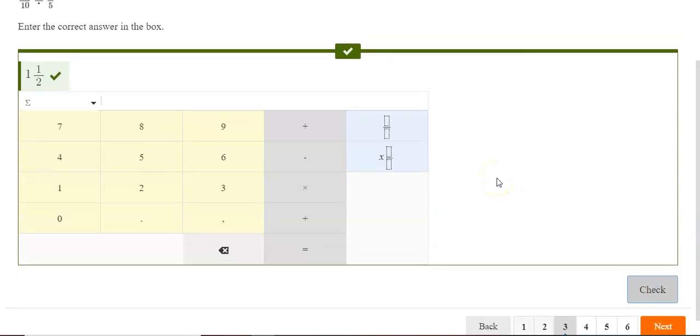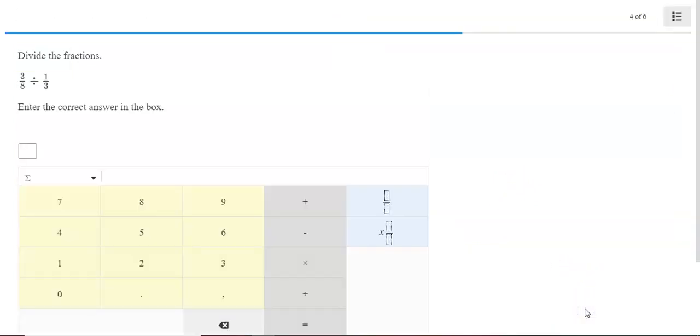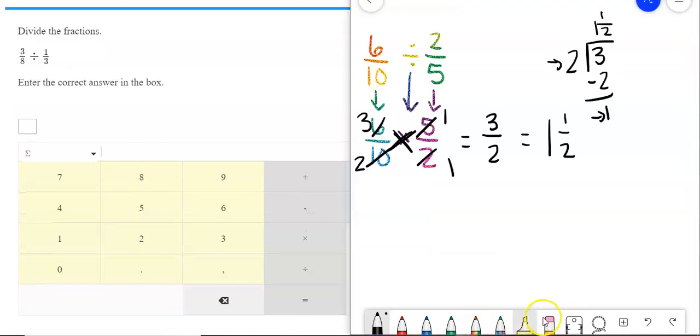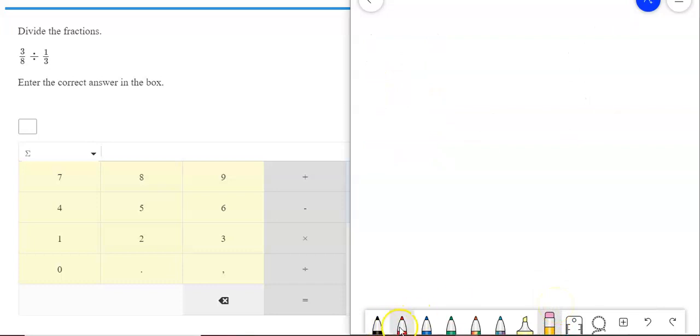So, that way you get your mixed number in the correct order. Our next one is three-eighths divided by one-third. The three-eighths comes straight down. Division changes into multiplication, and I flip the second fraction. If I look across, I cannot cross-cancel anyway. Three times three is nine. Eight times one is eight.